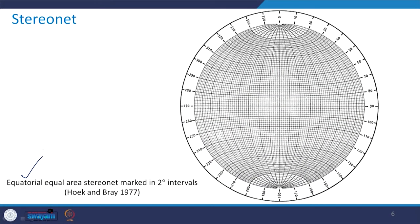Now we will learn about the stereonet. This is the equatorial equal area stereonet, which is the projection on the vertical plane. Starting from 0 degrees, all around its circumference you have up to 360 degrees. The periphery is divided into segments representing 10 degrees each, and every 10 degrees is further divided into 5 parts, meaning it is marked at 2 degree intervals.